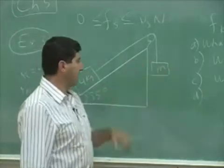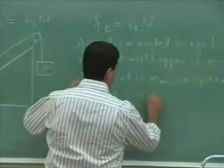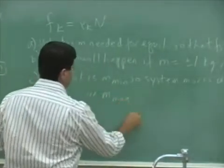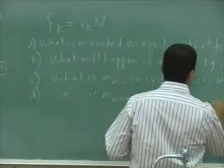There's a certain maximum mass I can have there. What is M max? So system moves down.